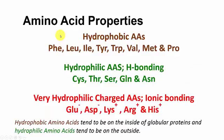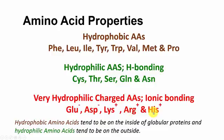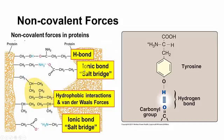Hydrophobic amino acids include phenylalanine, leucine, isoleucine, tyrosine, tryptophan, valine, methionine, and proline. Hydrophilic amino acids include cysteine, threonine, serine, glutamine, and asparagine. The charged amino acids are glutamic acid and aspartic acid (negative charge), and lysine, arginine, and histidine (positive charge) at physiological pH.